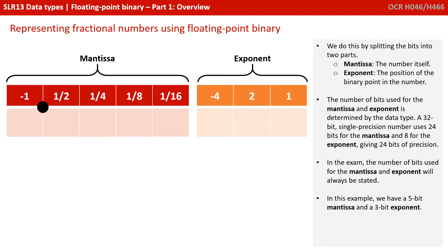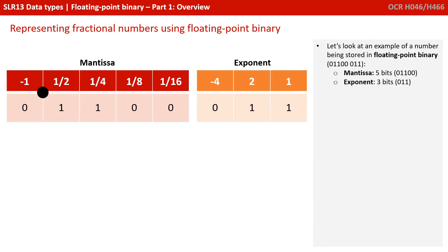Now, in the exam, the number of bits used for the mantissa and exponent will always be stated. In this example, we're going to have 5 bits for the mantissa and 3 for the exponent. So let's look at an example of a number being stored in floating point binary. We're going to go with 01100011, with the first 5 bits for the mantissa and the last 3 bits for the exponent.